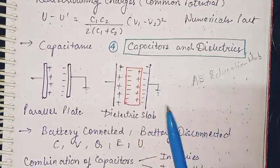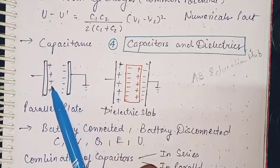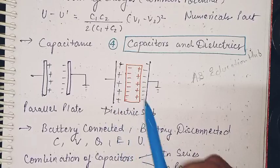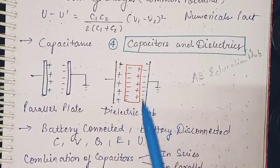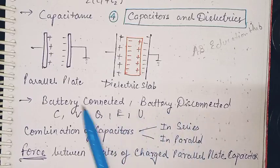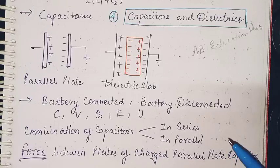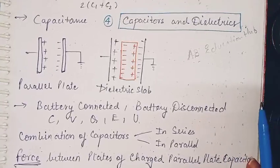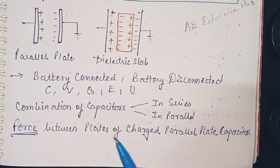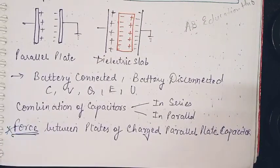Capacitors and dielectrics: parallel plate capacitance may be asked. Then if you insert a dielectric slab here, the derivation will be different. Battery connected, battery disconnected - what is the effect to capacitance, voltage and all these terms may be asked. Combination of capacitors in series and in parallel. Force between plates of charged parallel plate capacitors - this is also an important derivation.